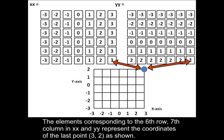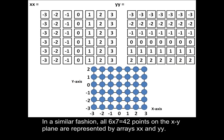The elements corresponding to the sixth row, seventh column in XX and YY represent the coordinates of the last point, as shown. In a similar fashion, all 42 points on the X-Y plane are represented by arrays XX and YY.